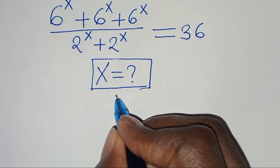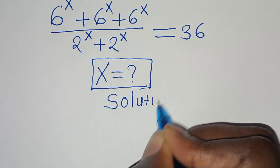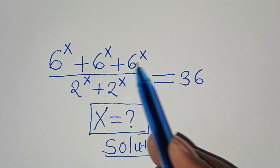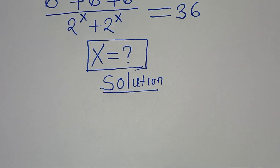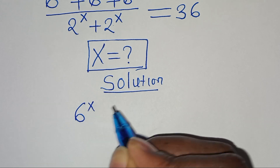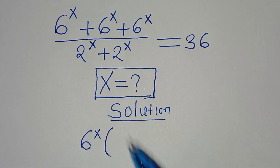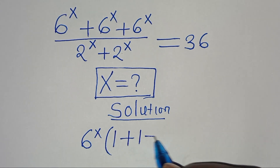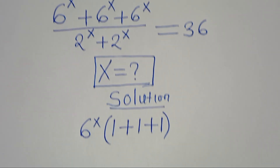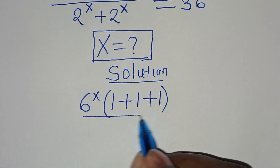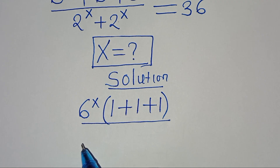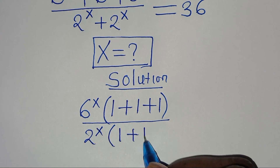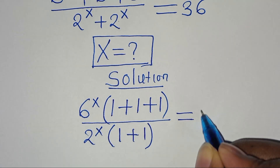Now let's provide a solution. In the numerator, 6 to the power of x is common, so we can factor out 6 to the power of x. This gives us 6 to the power of x divided by 6 to the power of x, which is 1 plus 1 plus 1. In the denominator, 2 to the power of x is common, so we factor out 2 to the power of x, giving 1 plus 1 in the parentheses, and this is equal to 36.